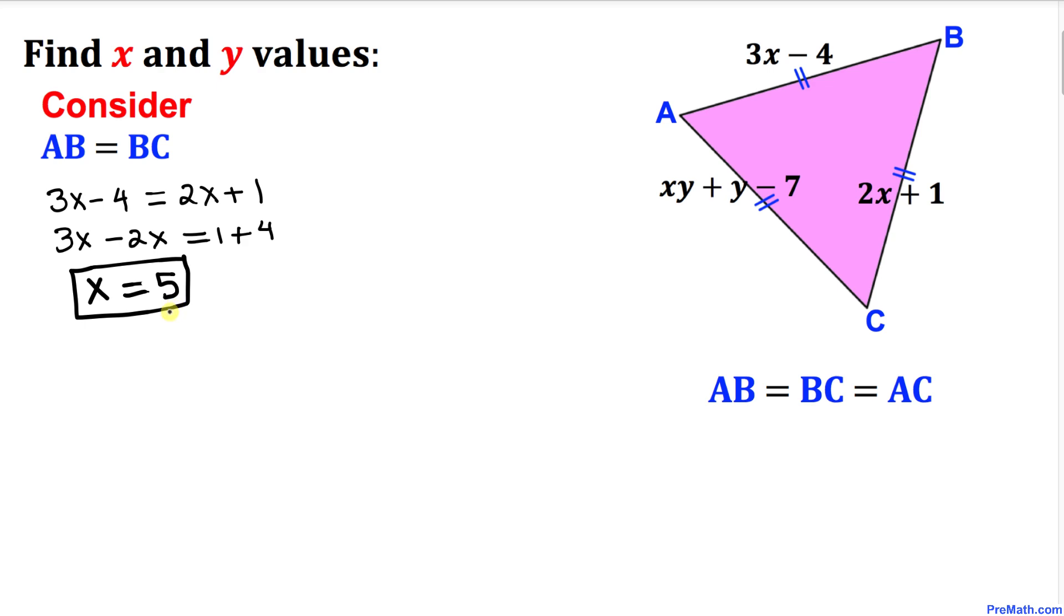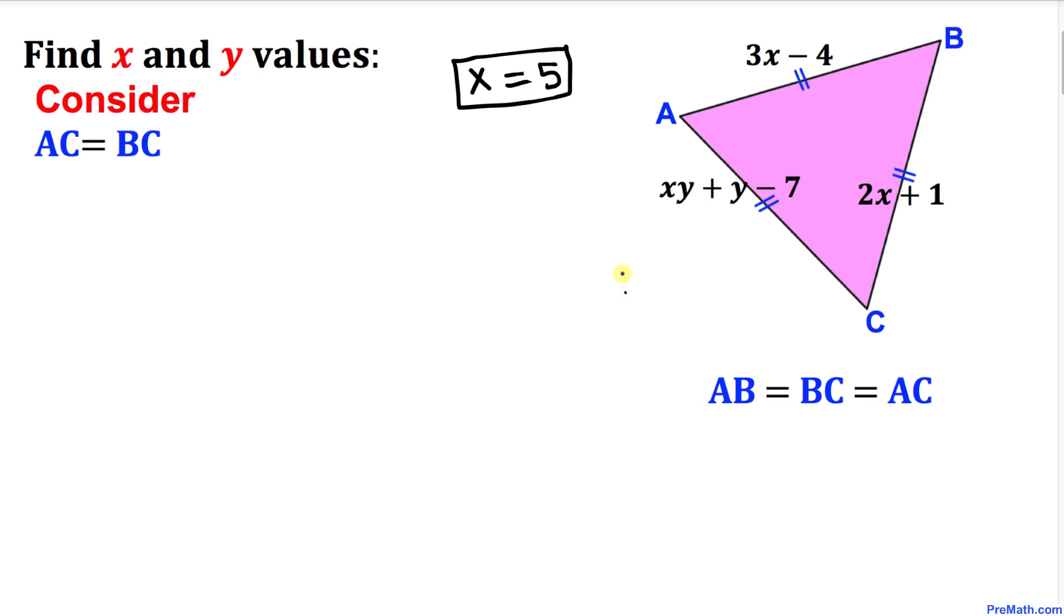Here's our next step: let's consider side length AC equal to side length BC. In our case, side length AC is xy plus y minus 7, and our side length BC is 2x plus 1, so we can write it as xy plus y minus 7 equals 2x plus 1.